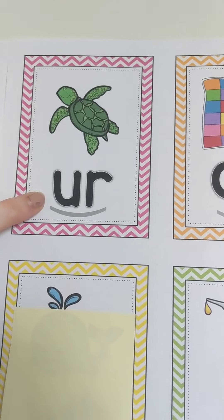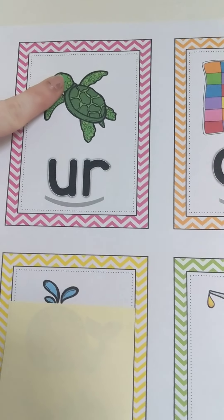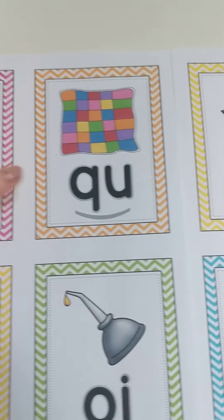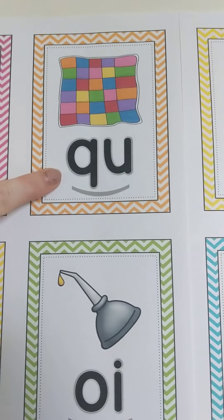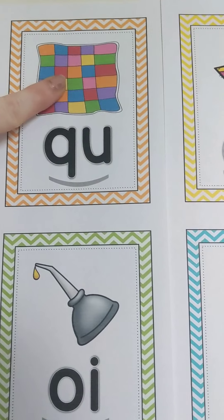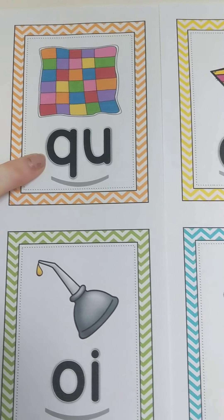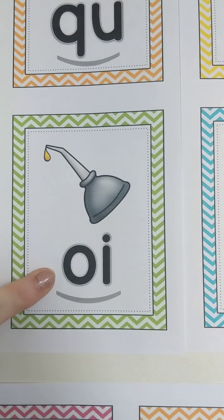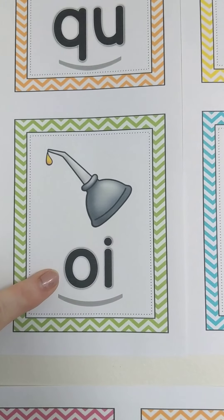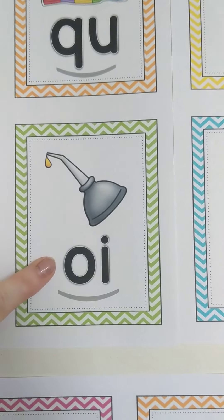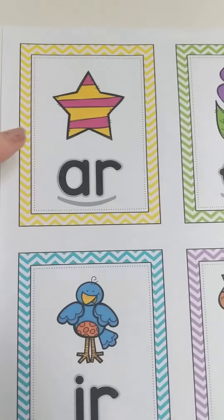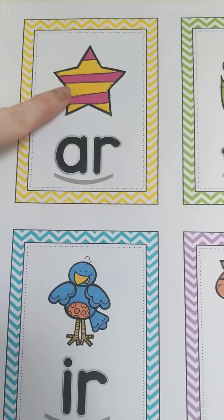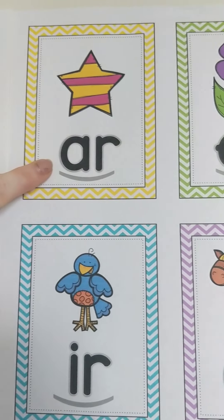U-R, turtle, er. Q-U, quilt, qu. O-I, oil, oy. A-R, star, R.